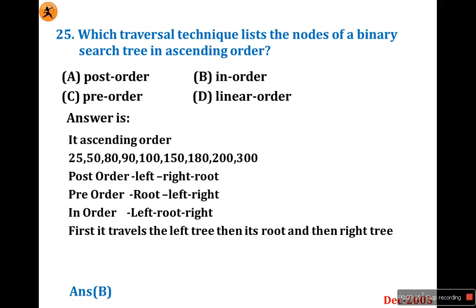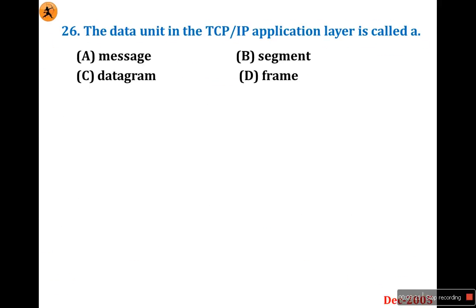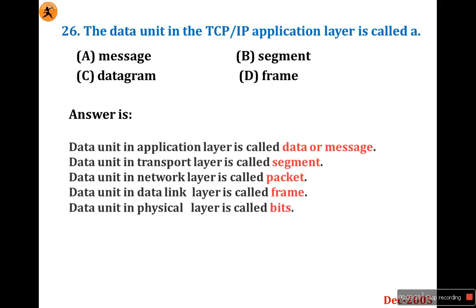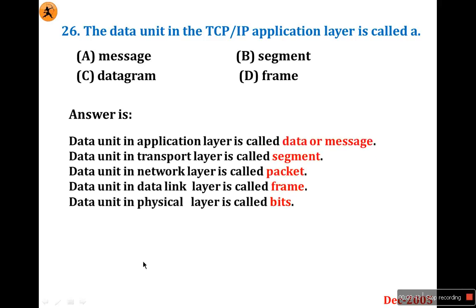The answer is B: in-order traversal. Next question: The data unit in the TCP/IP application layer is called what? I've listed all data units since they may be asked about different layers. Application layer: message or data. Transport layer: segment. Network layer: packet. Data link layer: frame. Physical layer: bits. So the data unit in the TCP/IP application layer is called a message. The answer is A.